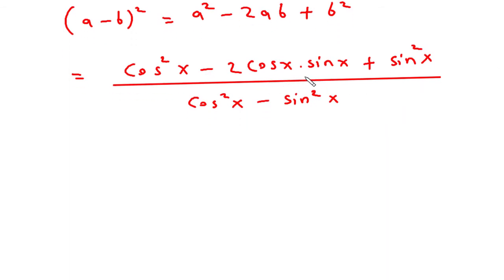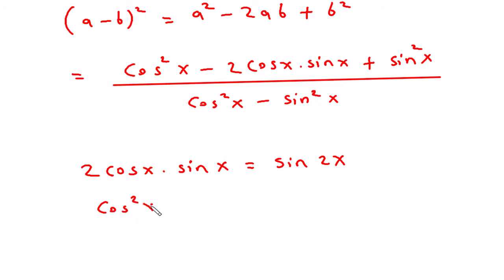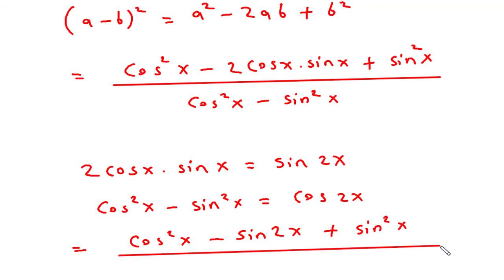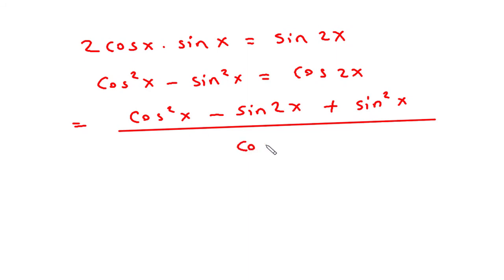Now we have two formulas to apply: 2 cos x into sin x is equal to sin 2x, and cos squared x minus sin squared x is equal to cos 2x. Substituting these, the numerator becomes cos squared x minus sin 2x plus sin squared x, and the denominator becomes cos 2x.